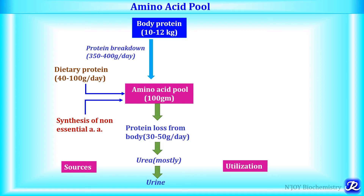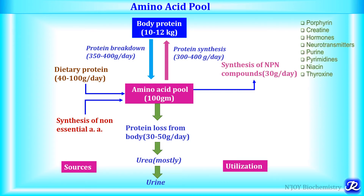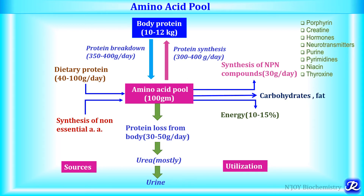Now, how is the amino acid pool utilized? Protein synthesis occurs from the amino acid pool — about 300 to 400 grams per day. Synthesis of non-protein nitrogenous compounds requires about 30 grams per day and is needed for synthesis of porphyrin, creatine, various hormones, neurotransmitters, purine, pyrimidine, niacin, and thyroxin. The amino acid pool also provides 10 to 15 percent of energy. If amino acids are supplied in the diet over the required amount, they can be converted to carbohydrates and fats.